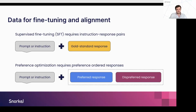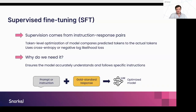With supervised fine-tuning, the supervision signal comes directly from the instruction-response pairs. We put in the prompt, look at the first token the model predicts, and compare it to the actual token in the gold standard response. Token by token, we do this optimization. The idea is we want the model to accurately understand the relationship between the instruction and the response, and how to follow specific instructions — and through generalization, address tasks beyond its supervised fine-tuning dataset.